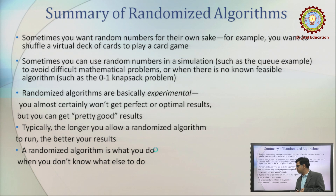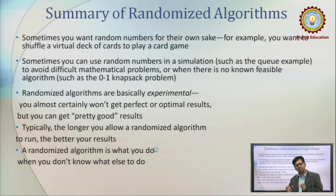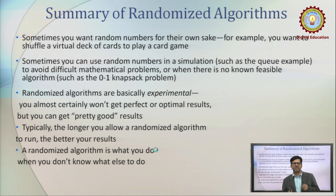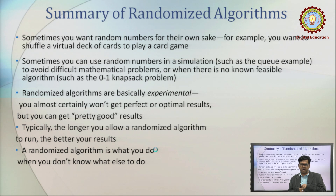To make the difference very clear: in a randomized algorithm, apart from input and output, there is a role of some random information, random bits, random numbers, or random outcomes. But when we talk about probabilistic analysis of algorithm, it means we are knowingly giving a random input to the algorithm and trying to find out the performance of that algorithm and its corresponding output.